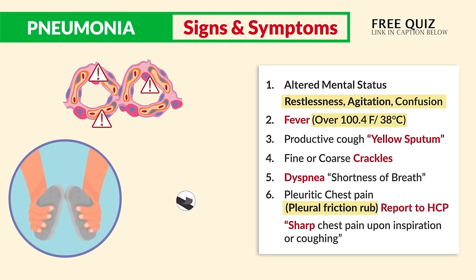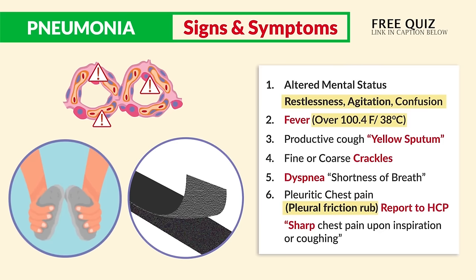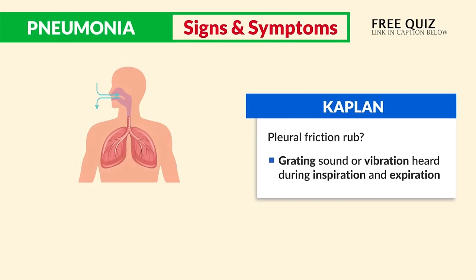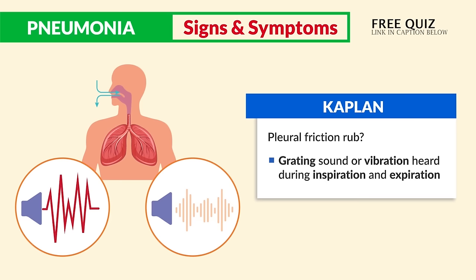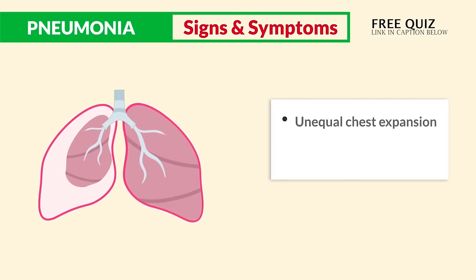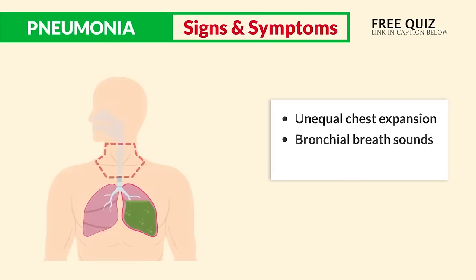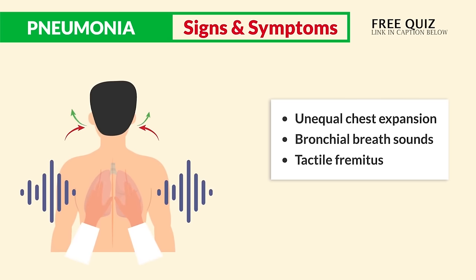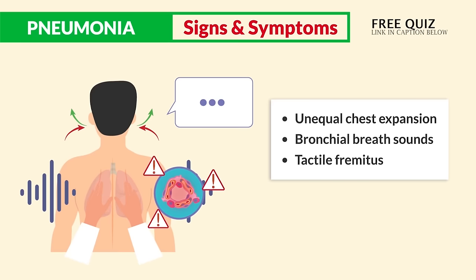The pleural friction rub sounds like rocks rubbing together, or sandpaper rubbing together. Kaplan describes it as a grating sound or vibrations heard during inspiration and expiration. Other signs — not really key for NCLEX — include unequal chest expansion, bronchial breath sounds which are high-pitched sounds, and tactile fremitus, which presents as more vibrations felt from a patient's back when repeating certain phrases, indicating denser or inflamed lung tissue.